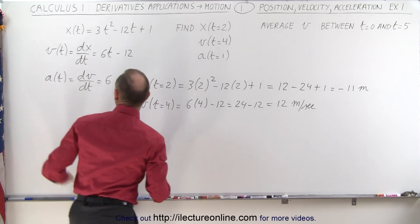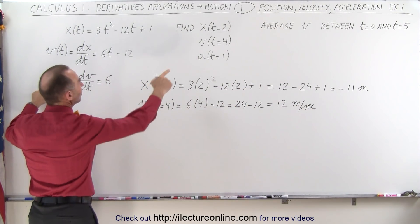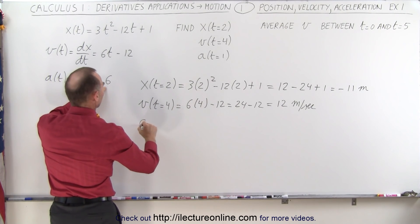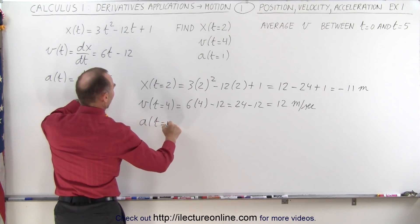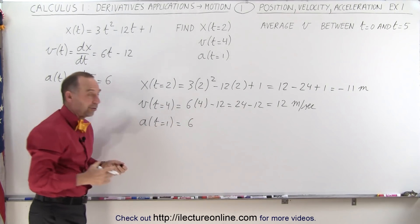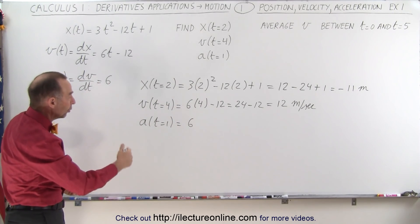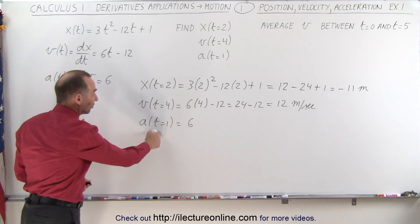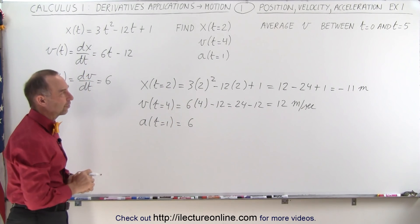Finally, we're going to find acceleration when t equals 1. We take our acceleration equation — acceleration when t equals 1 is simply equal to 6, because it doesn't depend on time. Acceleration will always be 6, whether time is equal to 0, 1, 2, 3, and so forth. So it makes no difference.